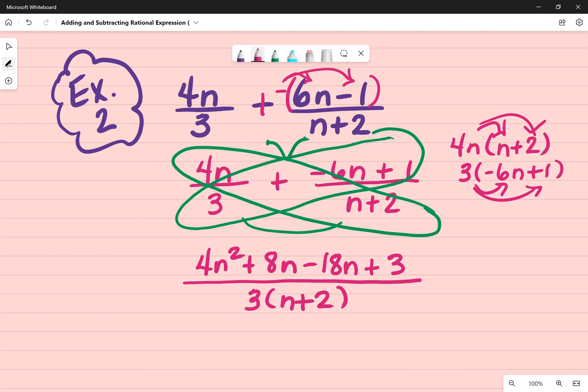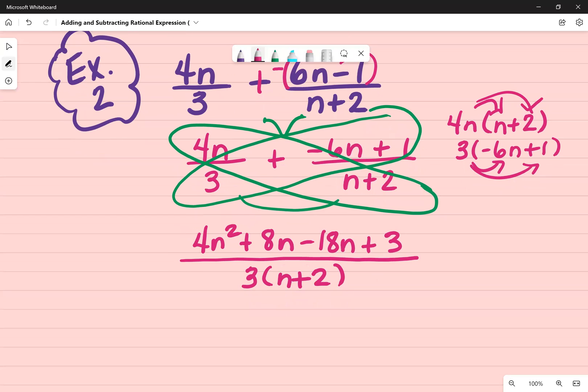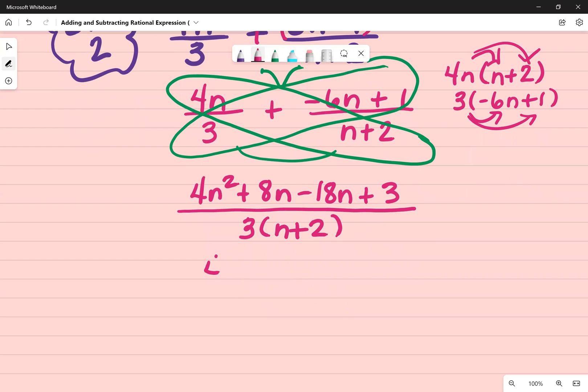So at the top, what I can do is go ahead and combine my like terms. I have 4n squared and then 8n minus 18n is negative 10n plus 3.